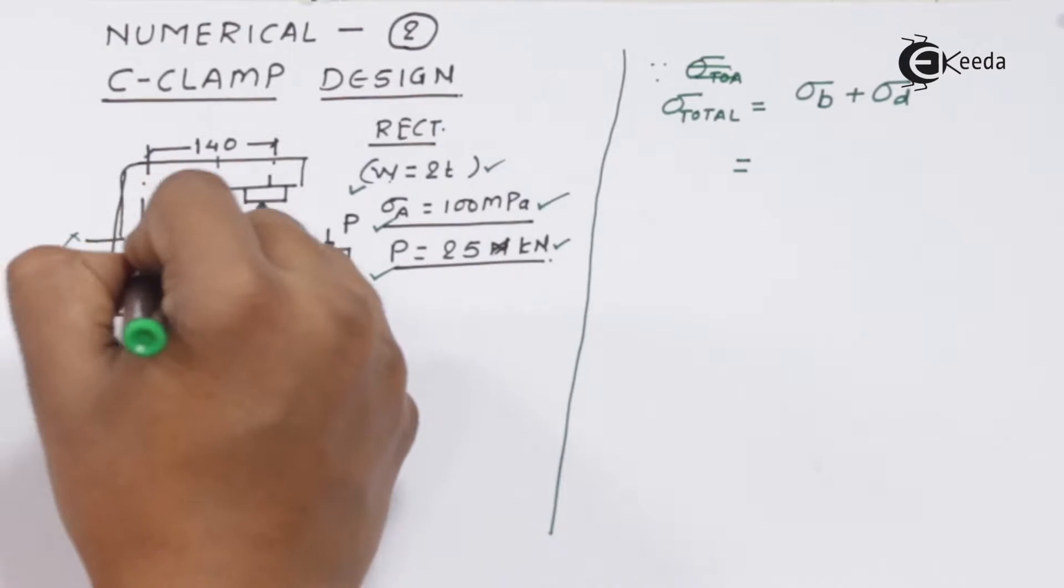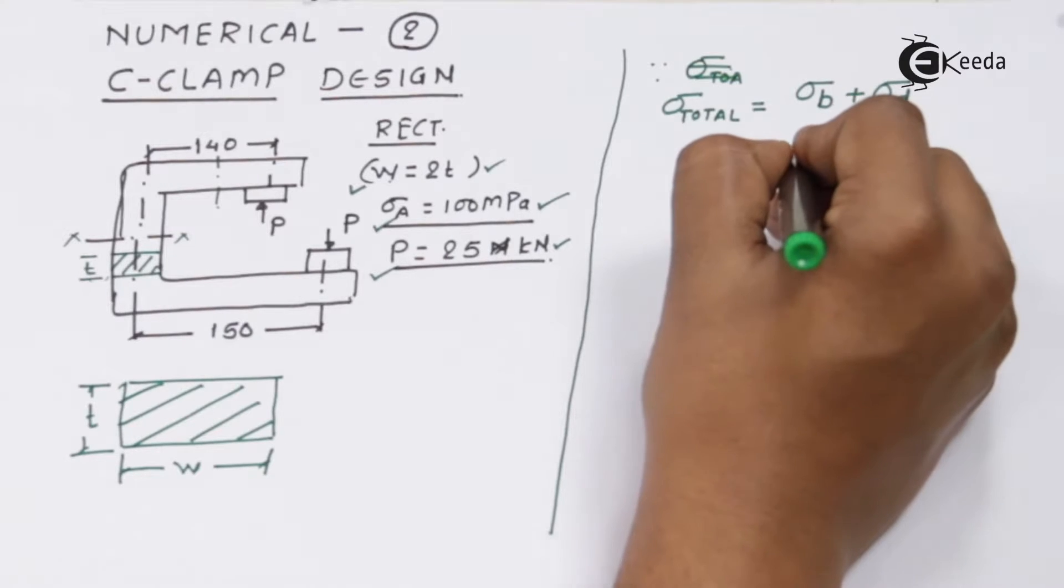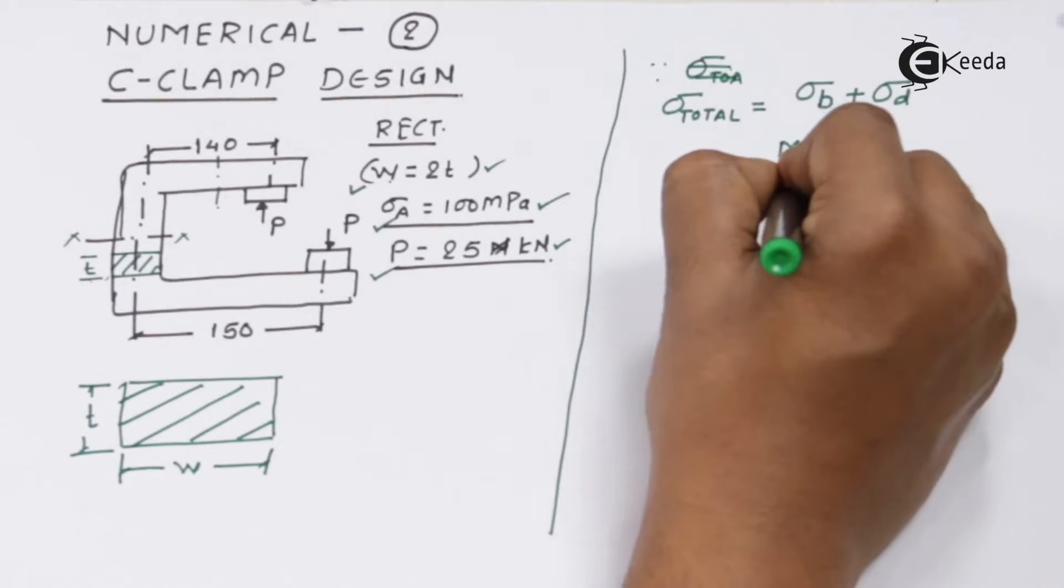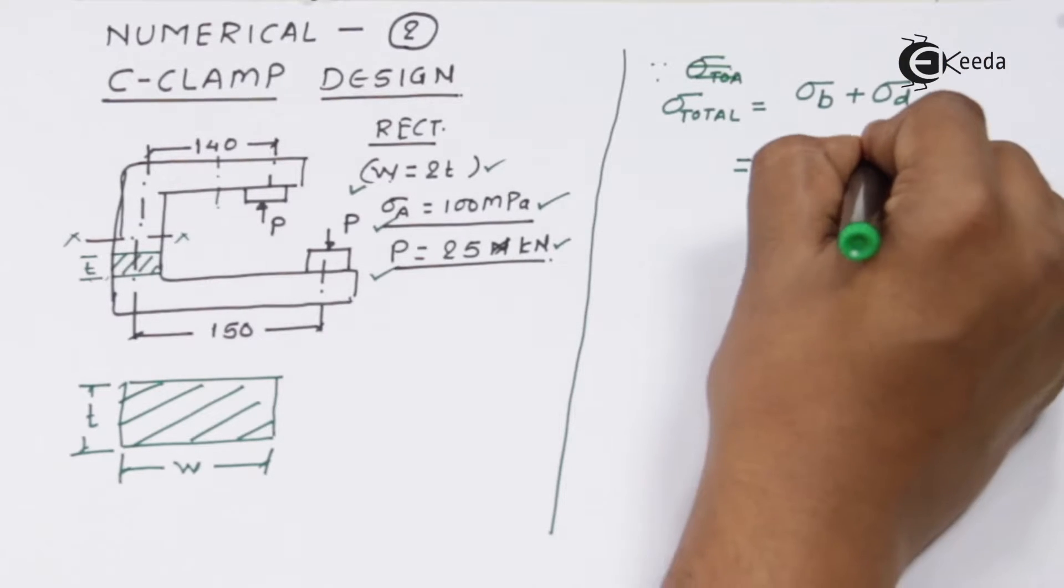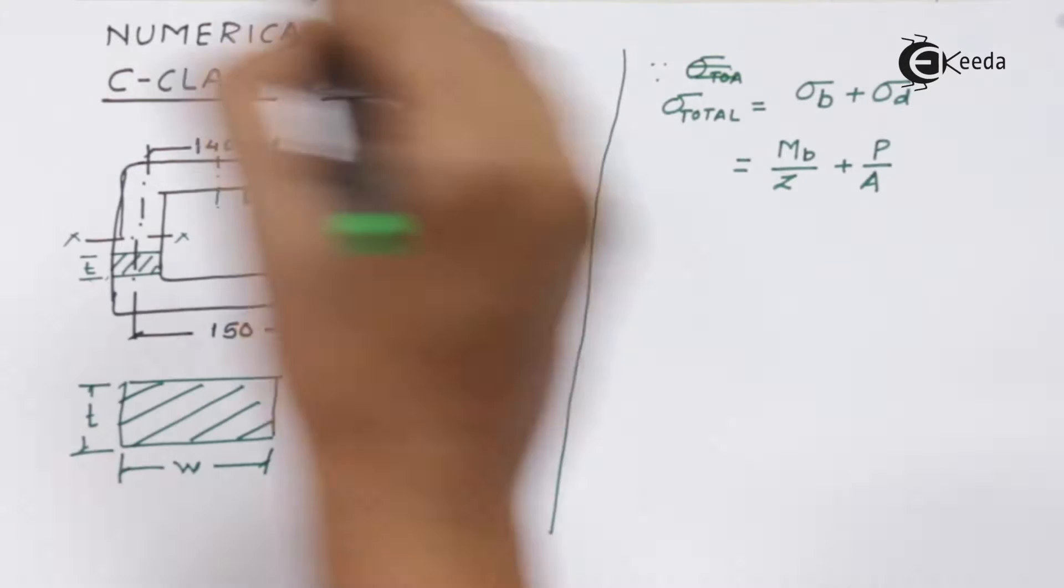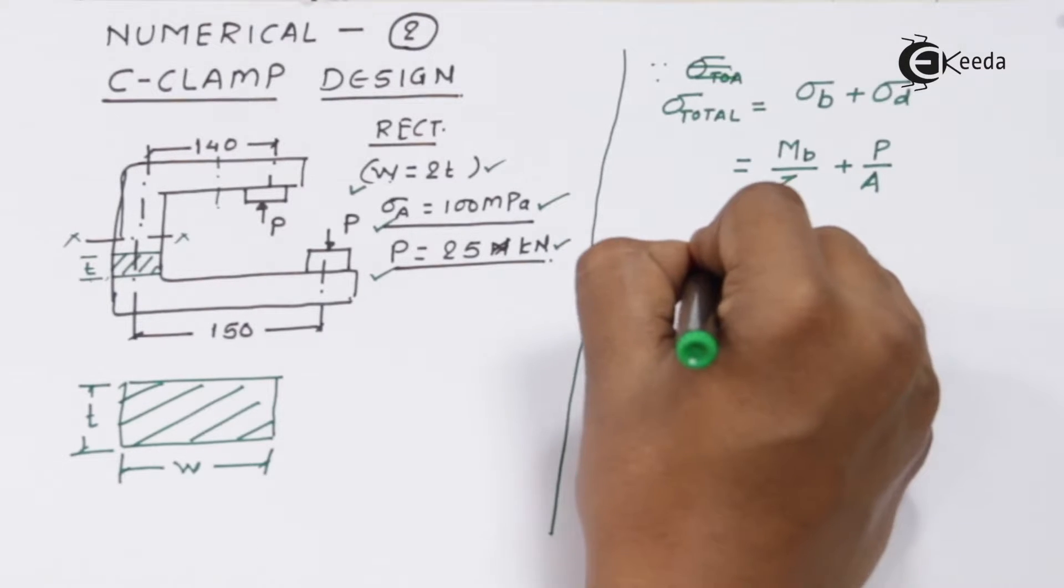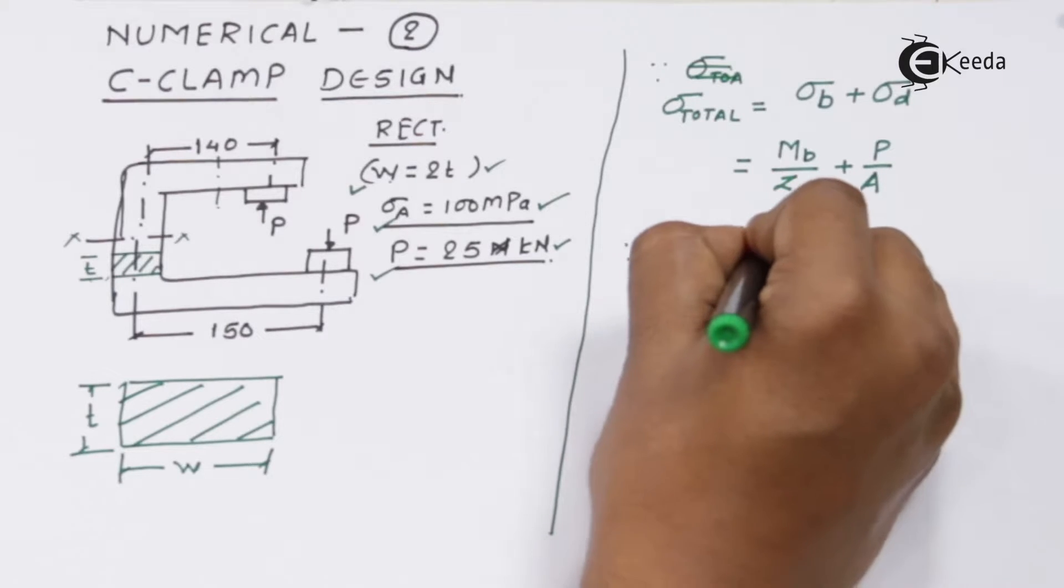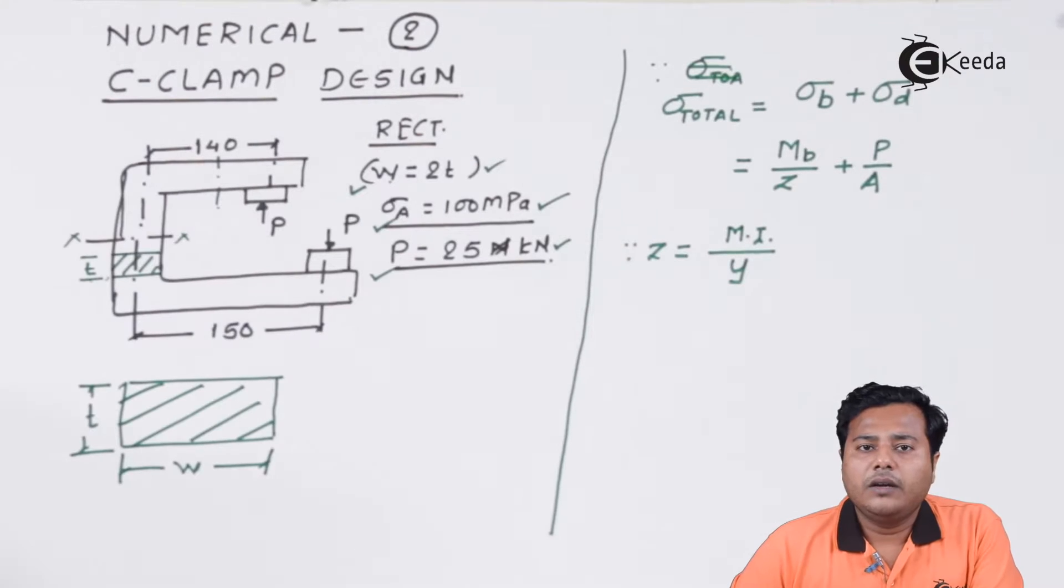It is a simple rectangular cross section. The bending stress will be given by bending divided by Z, and the direct stress will be given by load divided by area cross section. Z is section modulus and it is given by moment of inertia of the given cross section and the distance of the extreme fiber from the neutral axis.